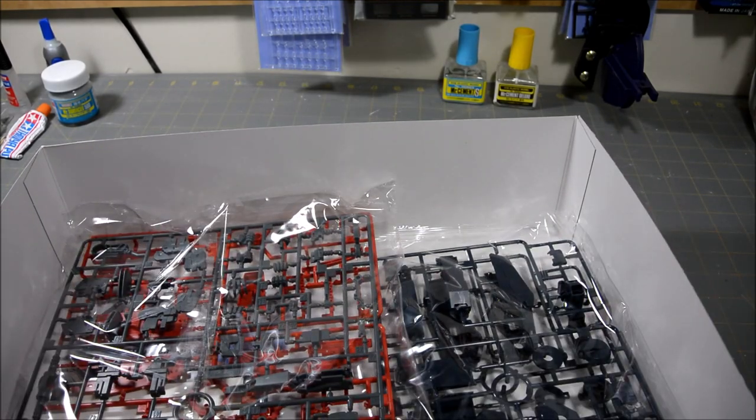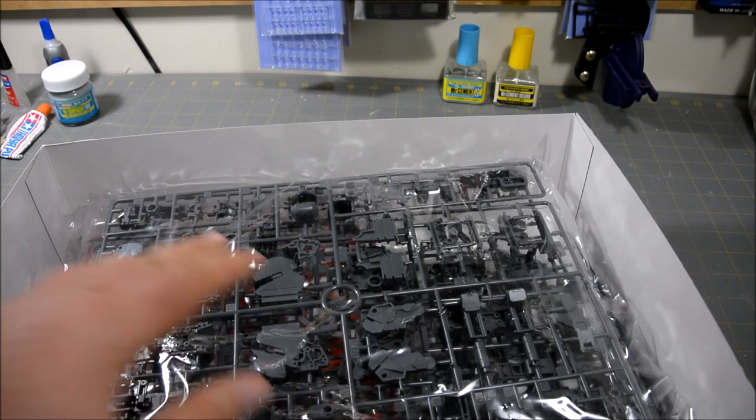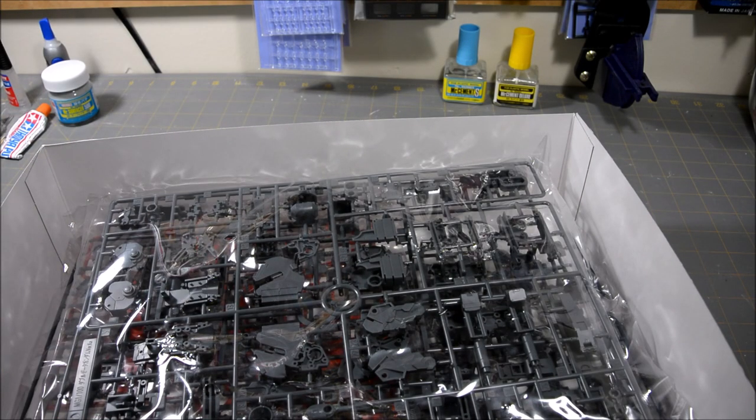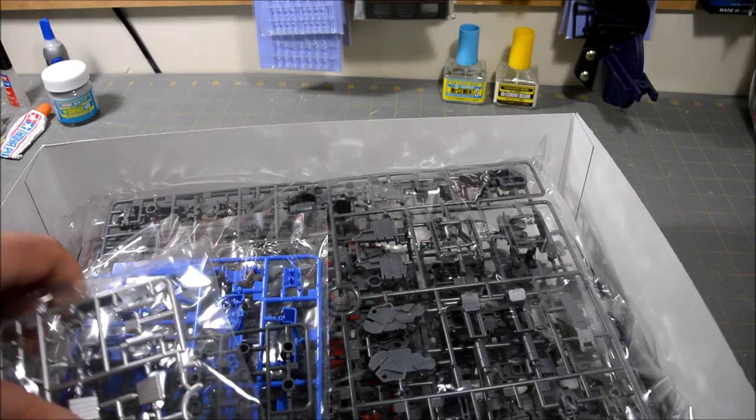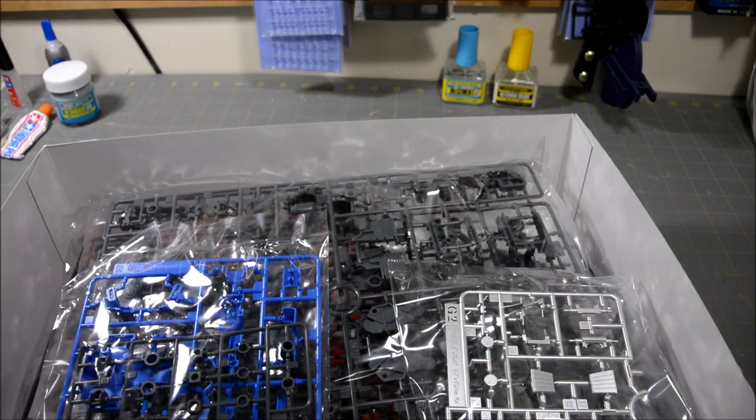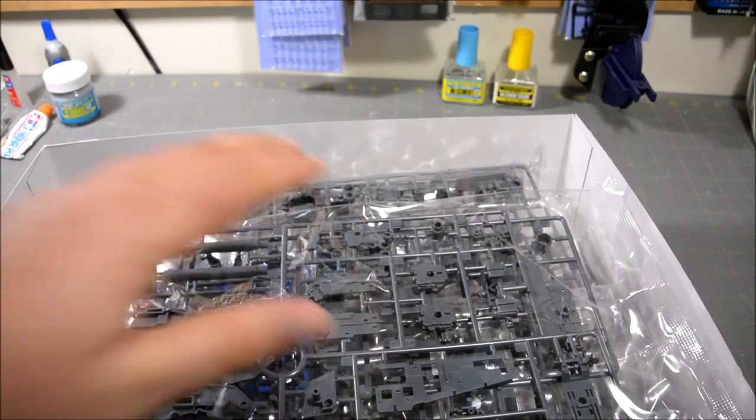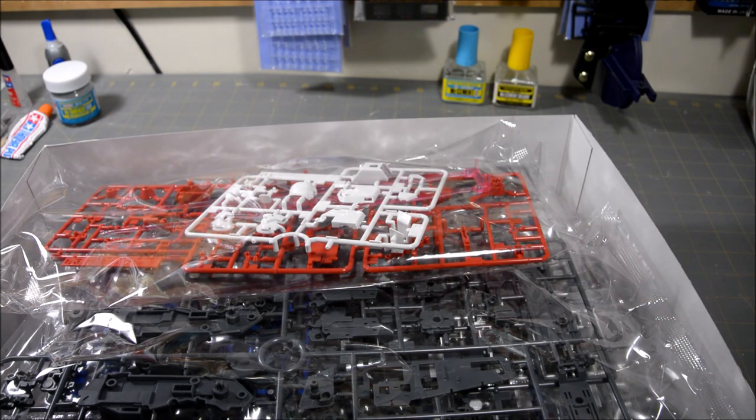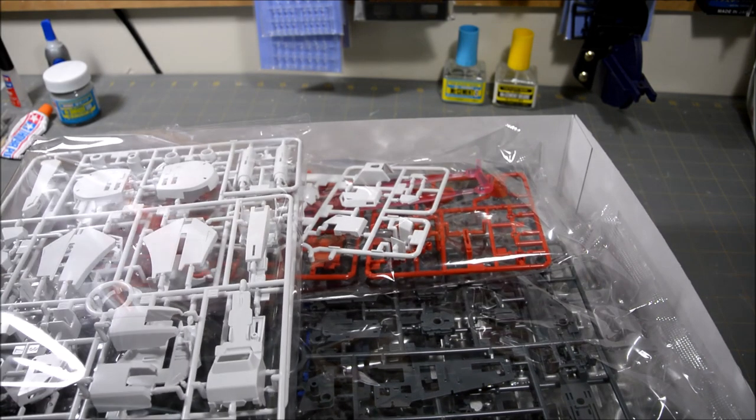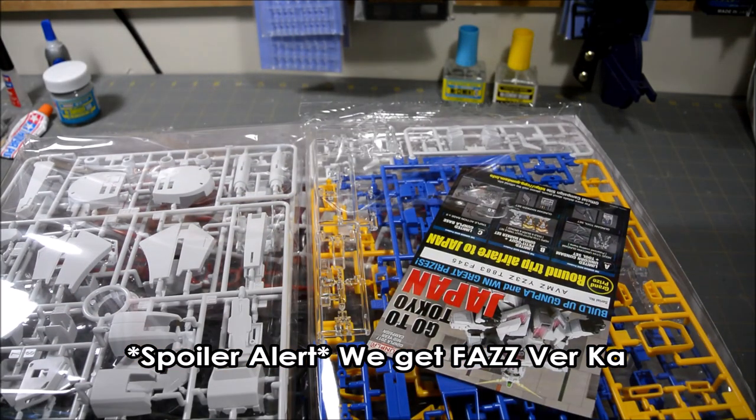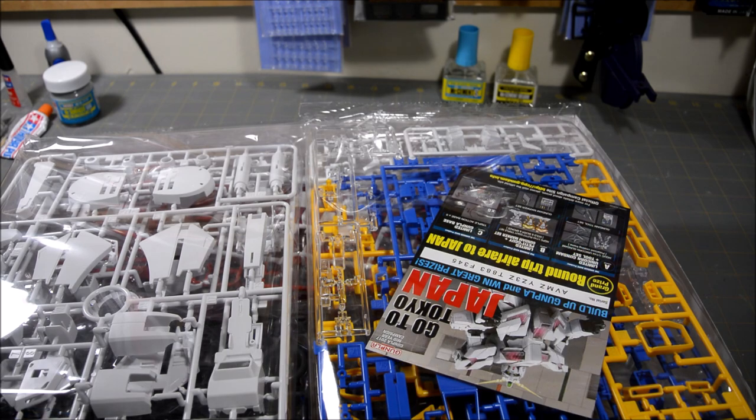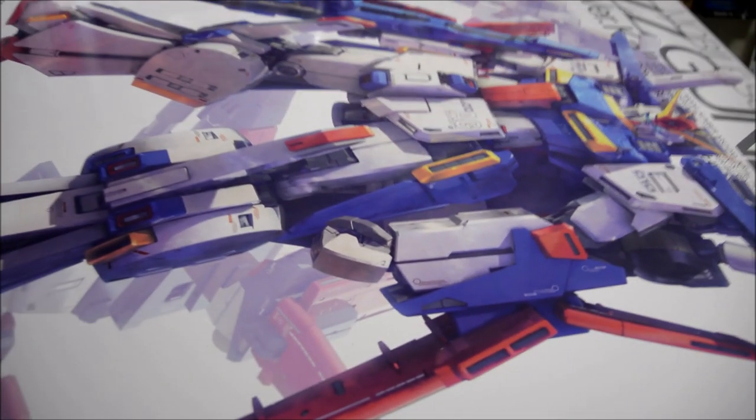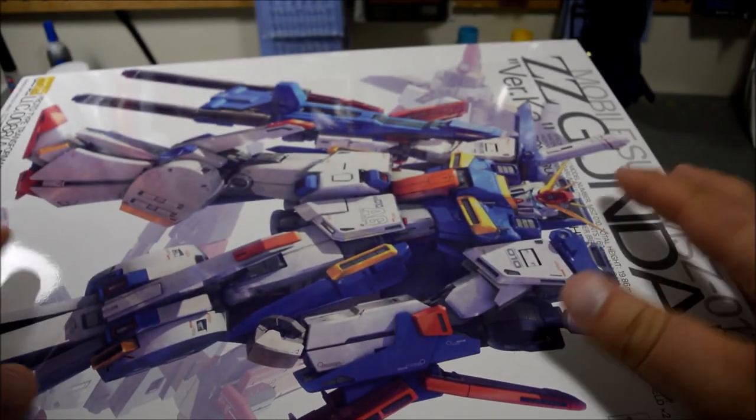I have ordered the Enhanced Double Zeta parts for this kit, which is the P-Bandai add-on set. Most P-Bandai kits lately have some sort of bonus add-on set. I was really kind of hoping that for this kit it would be the Full Armor parts, but it looks like at first anyway we're going to get the Enhanced Double Zeta parts, which is kind of like the precursor to the Full Armor.